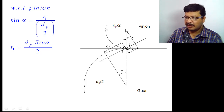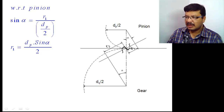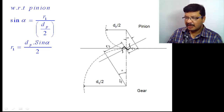From the geometry, sin(alpha) equals the opposite side r1 divided by the hypotenuse, which is the pitch circle radius dp/2. So the radius of curvature at the point of contact for the pinion tooth with respect to the pitch circle radius is r1 = dp·sin(alpha)/2. Similarly for the gear, sin(alpha) = r2 divided by dg/2, giving r2 = dg·sin(alpha)/2.